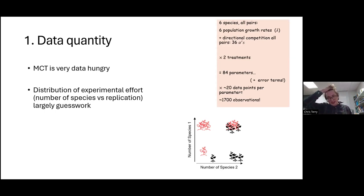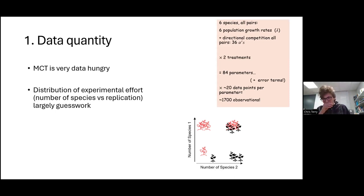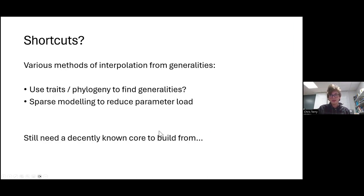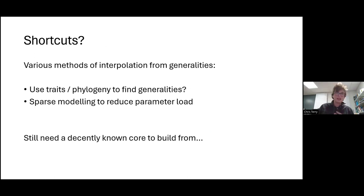When doing the review of studies, it's quite alarming how hard it is to get at the raw data, and how rare it is to report what the underlying n behind it actually is. Even when the number was given, it's often quite hard to interpret because monoculture trials create imbalances — the n might be enormous, but the amount of data that lies behind the competition coefficients in particular is often really quite small. The field has come up with various approaches to pool information — whether that's traits, phylogeny, or sparse modelling — but it's still going to need to build from a decent core.